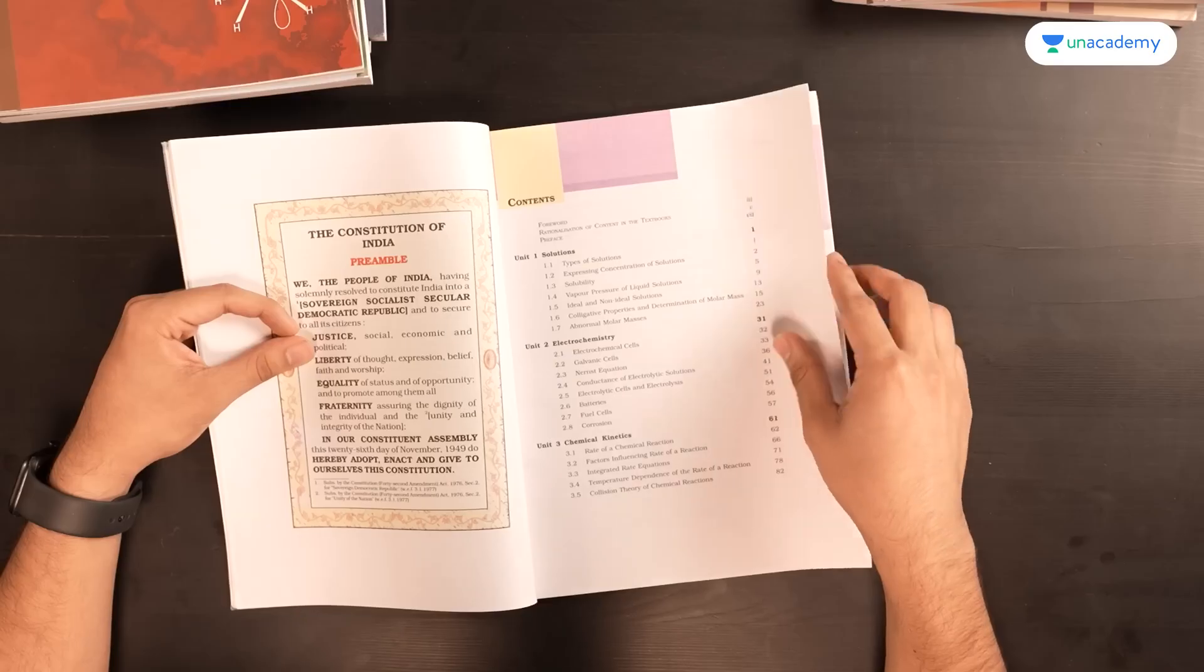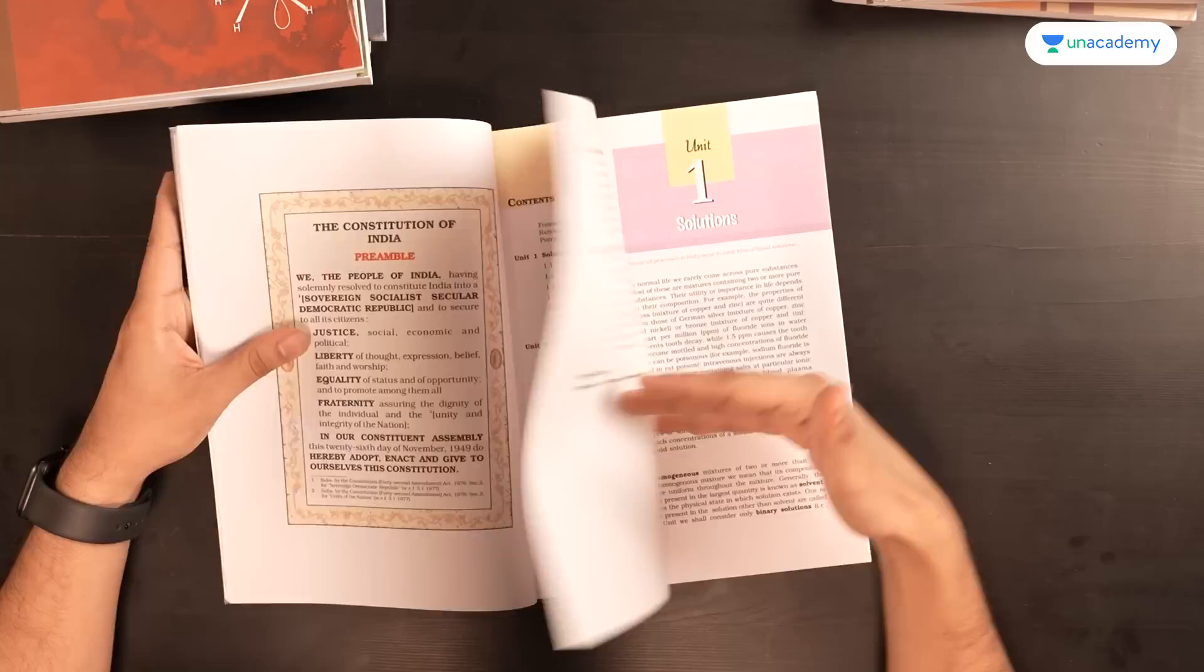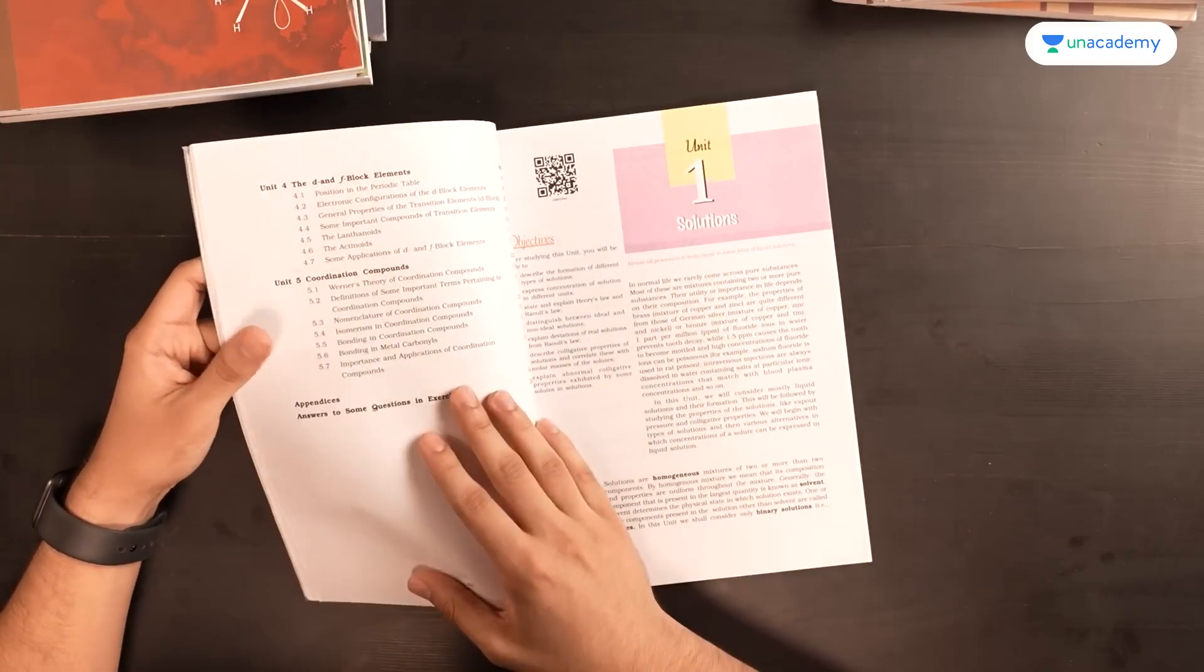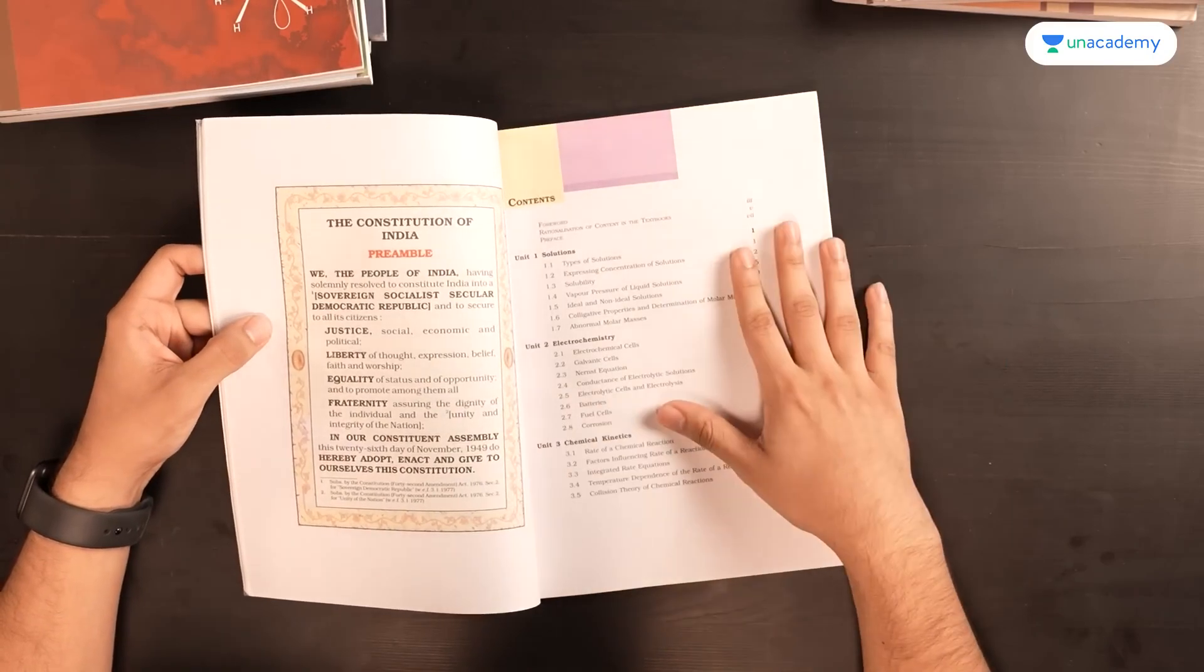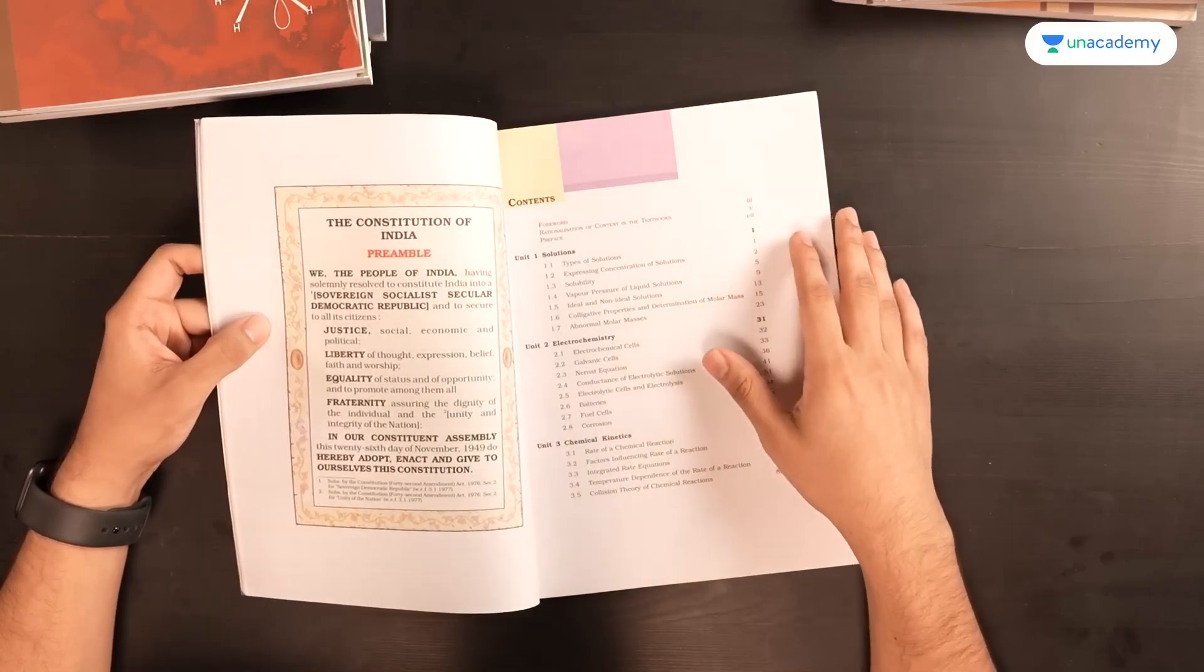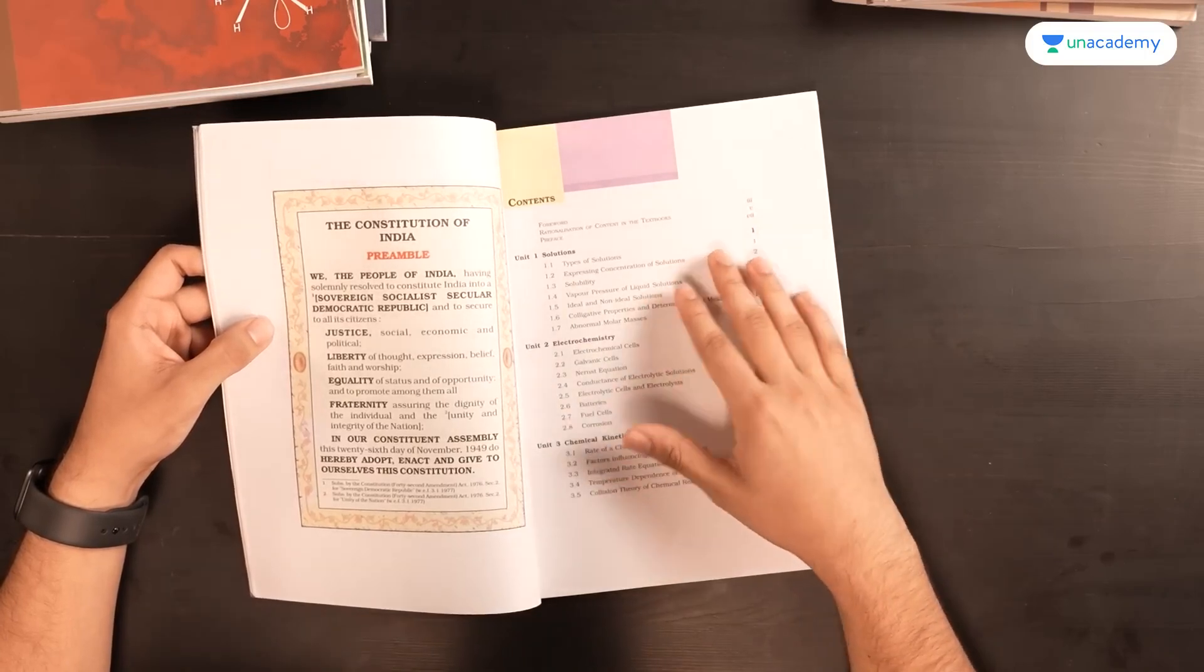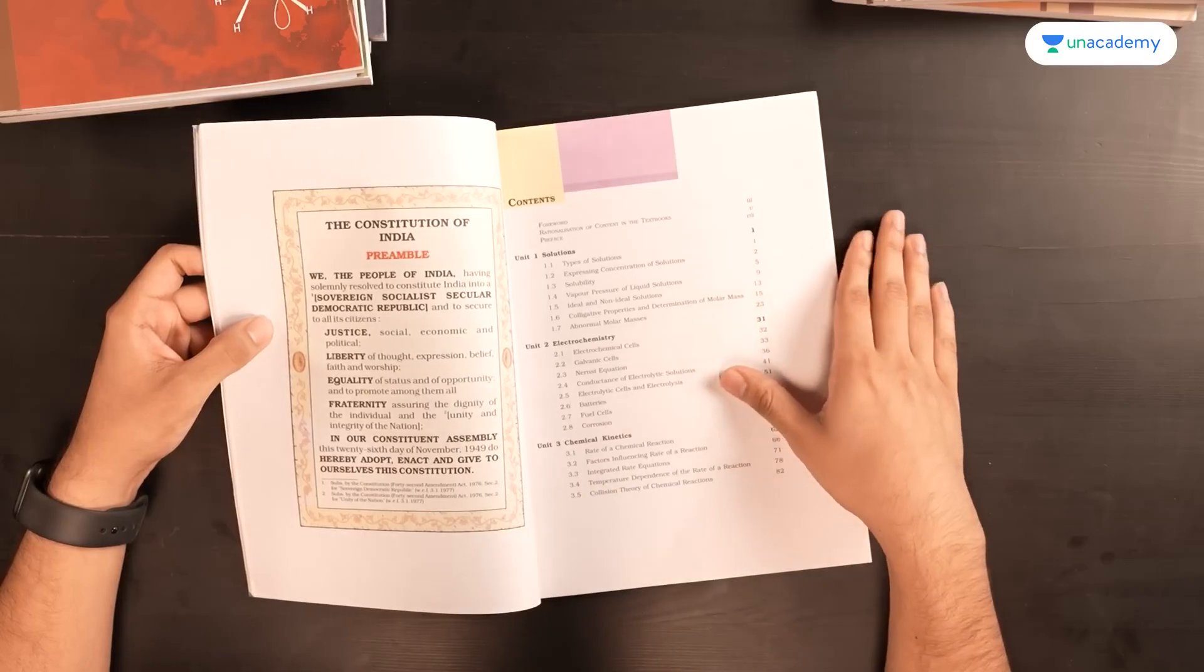Like solutions, electrochemistry, chemical kinetics. All these are chapters that have to be revised again and again and for these numericals also have to be performed. Reading this chapter followed by numericals is a good way of going through these.